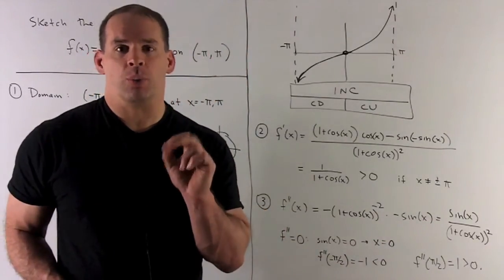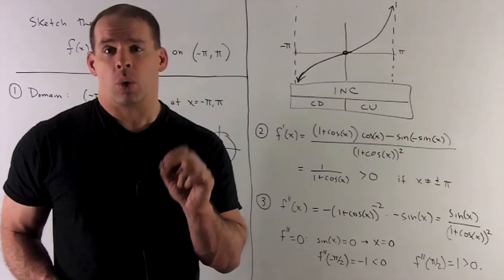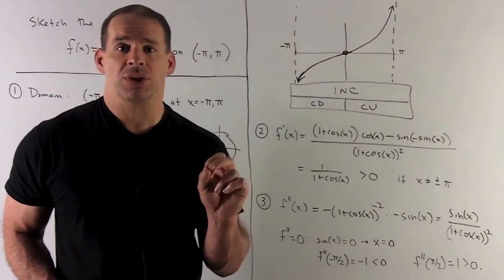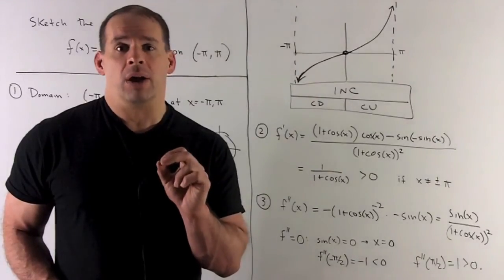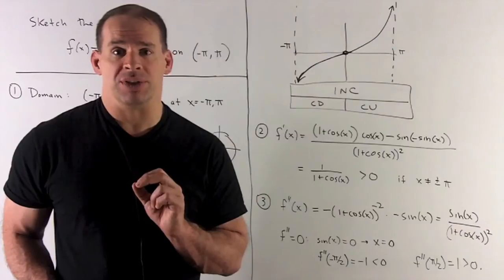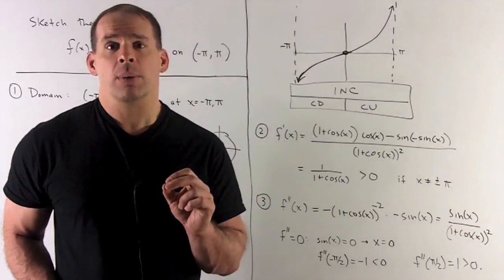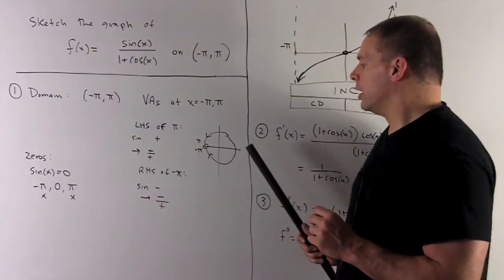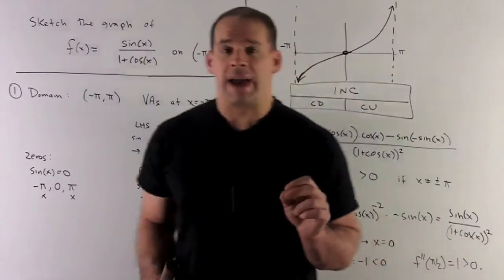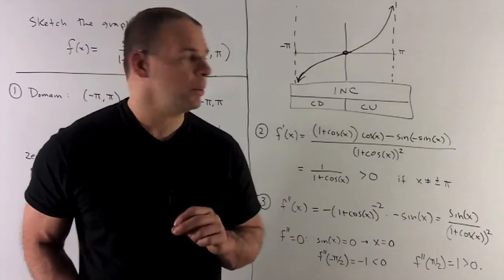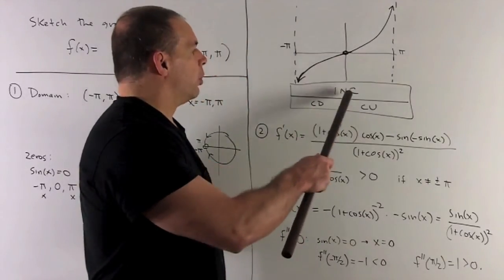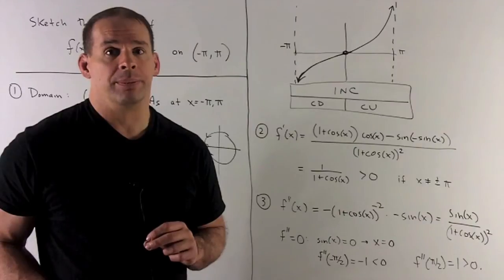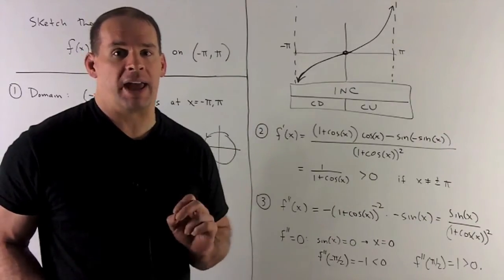We want to know where the second derivative is zero or undefined. The denominator is zero only at the asymptotes, so we focus on where the numerator is zero — that is, where sin(x) = 0. That happens at x = 0 or at plus and minus pi; we discard plus and minus pi, so the only candidate is x = 0. We mark it off and check one point on each side.